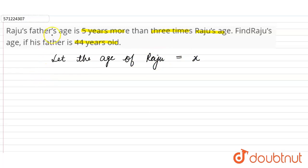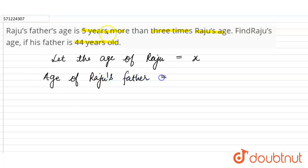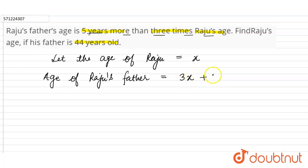The age of Raju is x. The question says that the age of Raju's father will be equal to five years more than three times Raju's age — that is, three times x plus five. So three x plus five is the age of Raju's father.